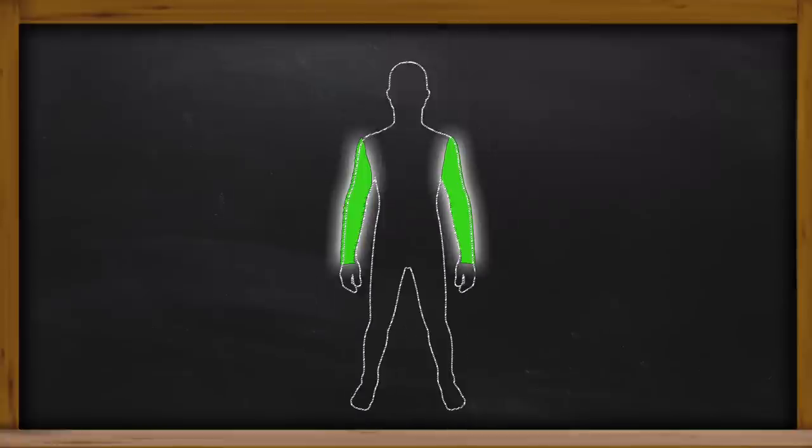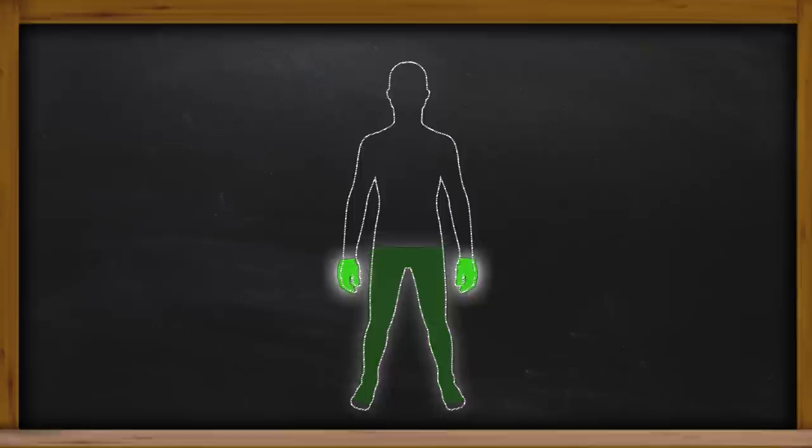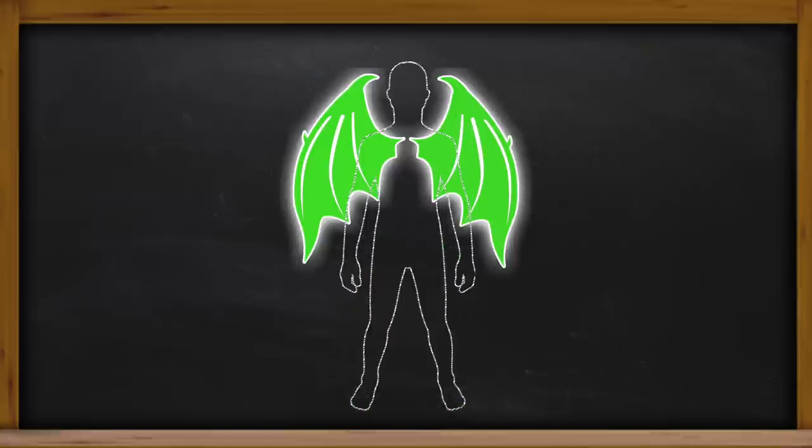You have two arms, two legs, ten fingers, ten toes, but no wings.